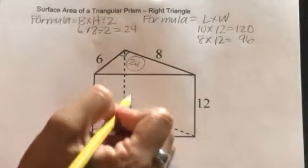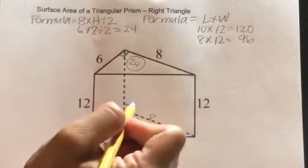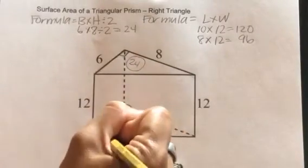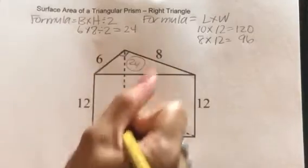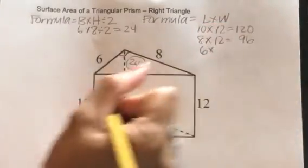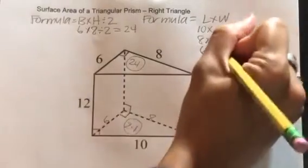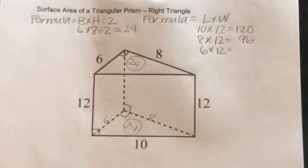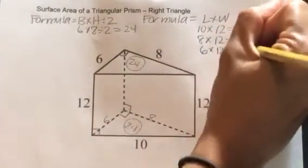Okay, last rectangle, which is on this side. I need a length. I don't have anything here, but I'm going to look up, and I see it lines up with six. So I'm going to do six times the width, which is 12. And six times 12 is 72.